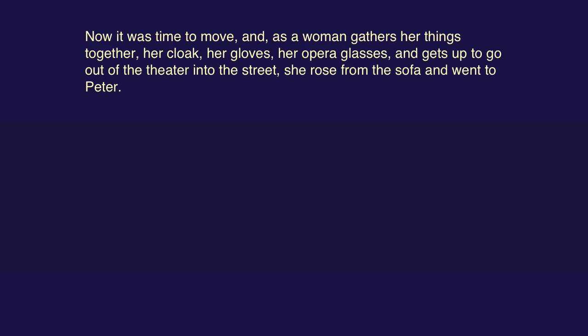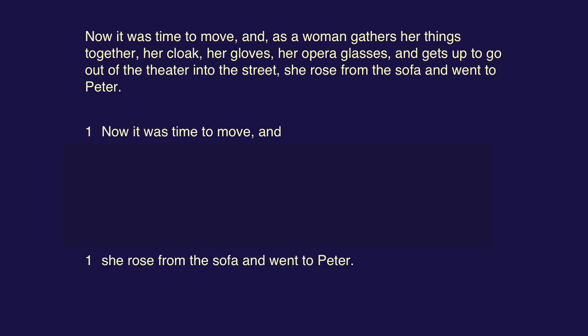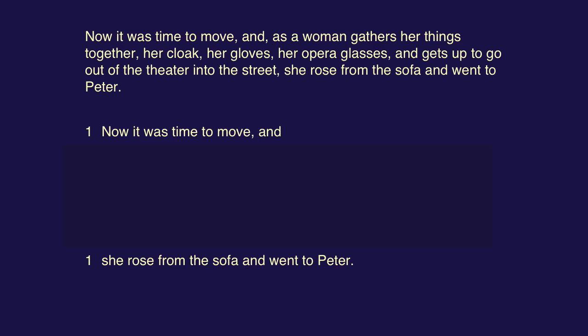The first thing I want to do is to take all of this apart. First thing we see is actually a sentence, and there's an 'and' after it because we're going to be joining it to a second sentence, but that doesn't come until the end. There's a nice little way to check that these are in fact sentences — it's called tagging. 'Now it was time to move, wasn't it?' 'She rose from the sofa and went to Peter, didn't she?' If you can do that, it's a sentence. We've put a one in front of each of them — those are going to be called level ones.